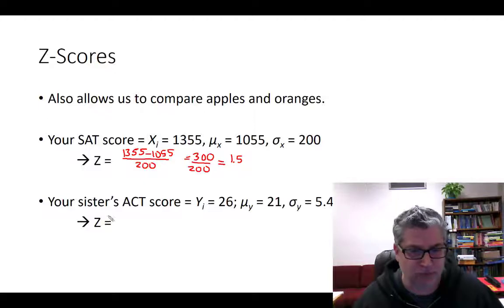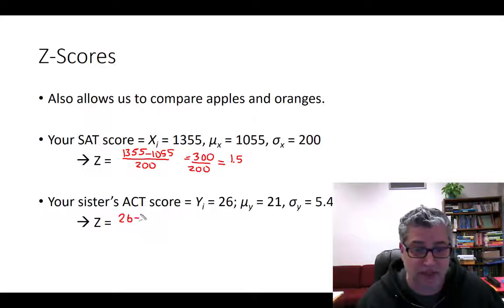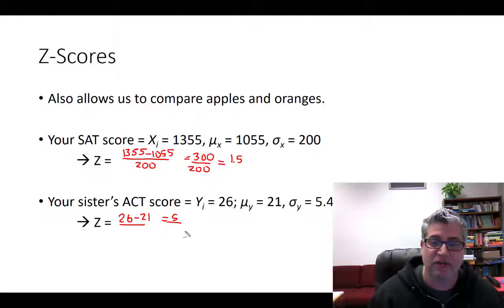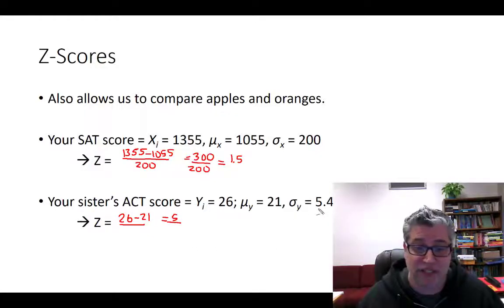Now, what about your sister? She also did better than average. She scored a 26. That's 5 points better than 21. But, what does that mean in terms of standard deviations? Well, it turns out that the standard deviation for ACT scores is a lot closer to 5.4.